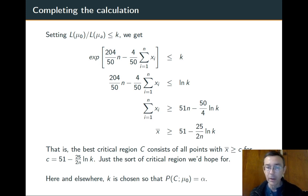So k is just some constant, n is the sample size. Notice we haven't said anything about the significance level yet and when we choose the significance level that would force our choice of k on us here. We were hoping for a best critical region that looked something like x̄ greater than or equal to some value. And that's what we got.